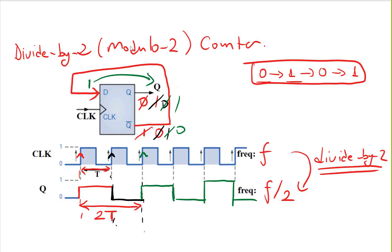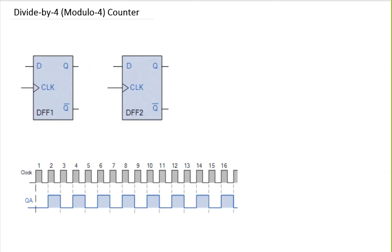The idea here is using the inverted Q as feedback to my data input. Now let's look at this divide-by-4 or modulo-4 counter. In this case, we will be cascading our flip-flops. This is my clock signal.